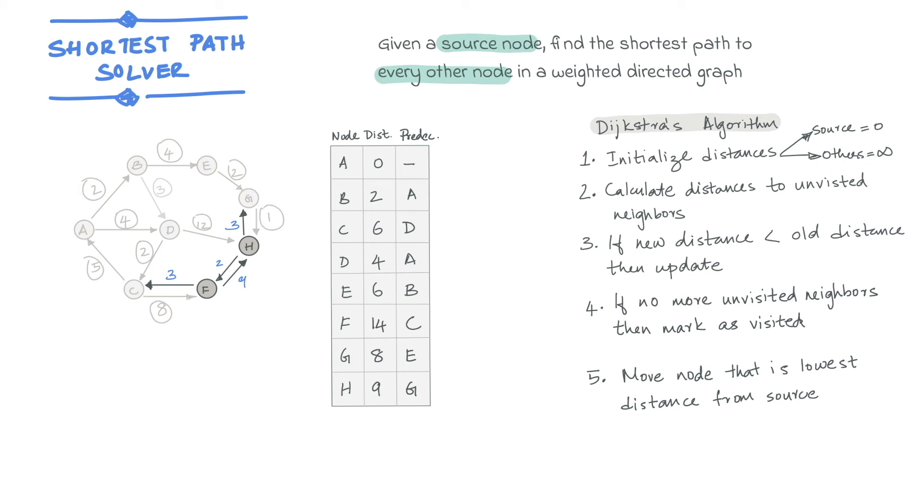The final table after visiting all the nodes and following the steps of the Dijkstra algorithm is as follows.